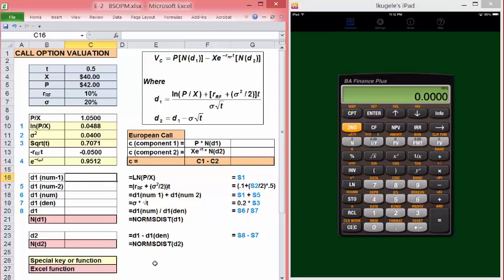We're going to break the calculations down into components to make it easier and less error prone. So, the first component of d1 in the numerator is just LN of P over X. The second part is equal to left paren, the risk-free rate, plus another left paren, variance divided by 2, close parens.